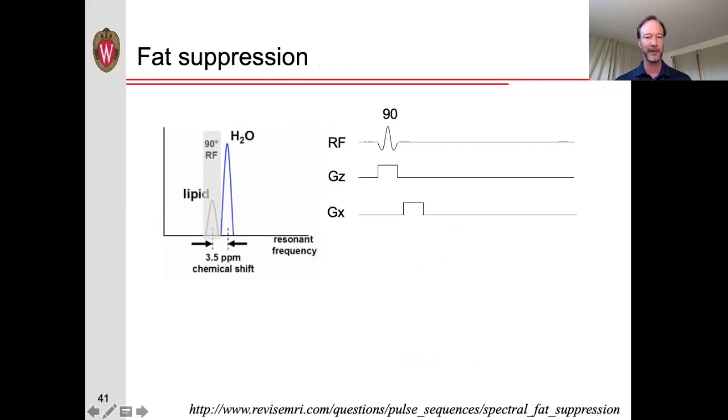Now, one way we can correct for that would be to send in a 90-degree RF pulse at a slightly different frequency, that is, one that matches the fat peak, then crush that magnetization, and then continue our imaging sequence.